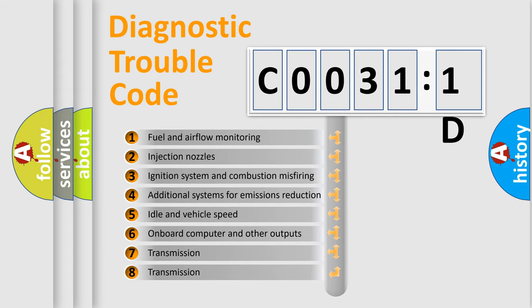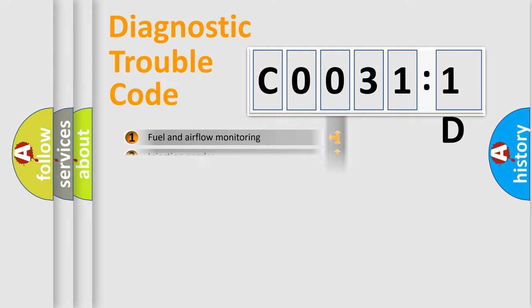The third character specifies a subset of errors. The distribution shown is valid only for the standardized DTC code.